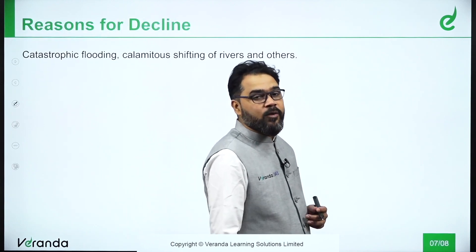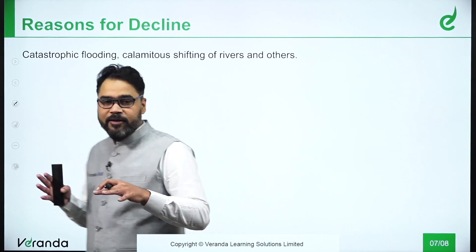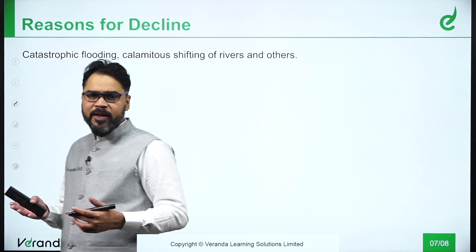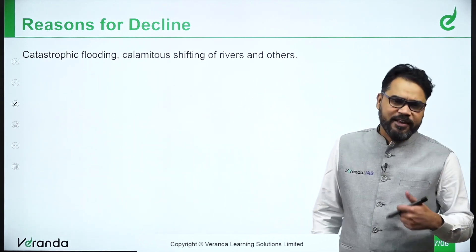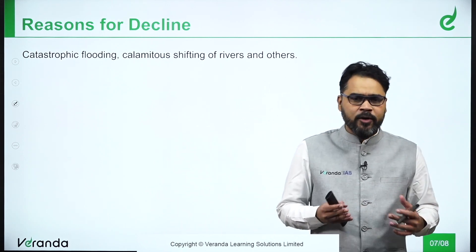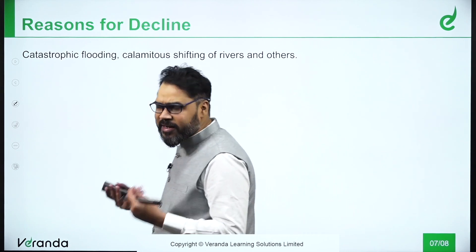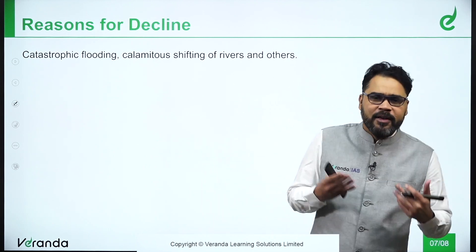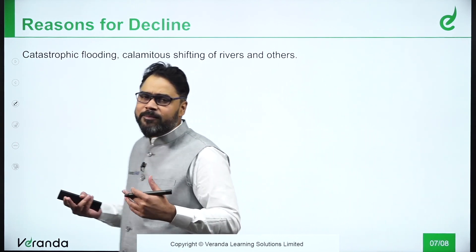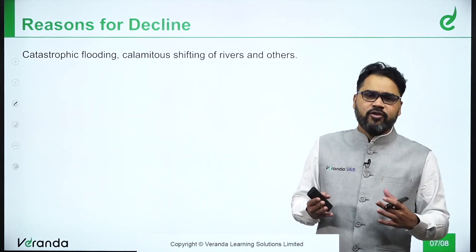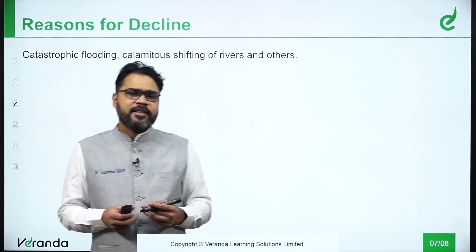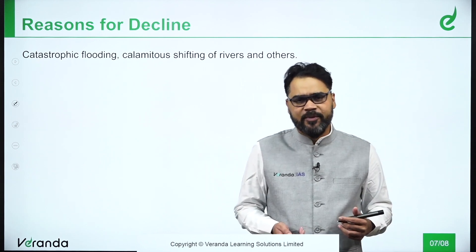The reasons for the decline are not fully known. Based on assumptions and surveys, it can be said that these civilizations ended due to catastrophic flooding caused by the Indus and its associated rivers. Some suggest there may have been internal warfare, though there are no evident proofs. There might also have been earthquakes or other events, but no substantial proofs exist. Ultimately, catastrophic flooding brought by the Indus River and its tributaries is the most supported reason for the decline.